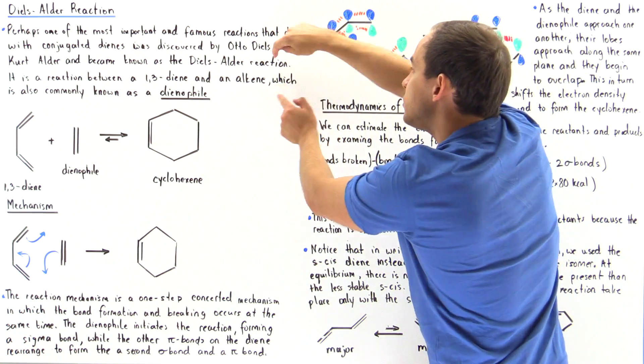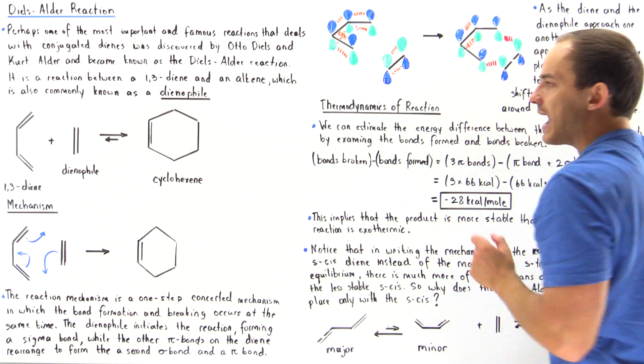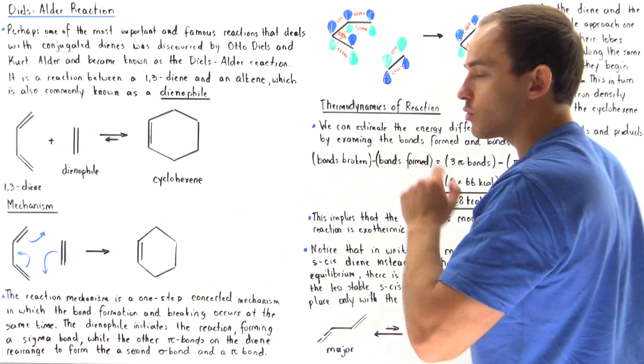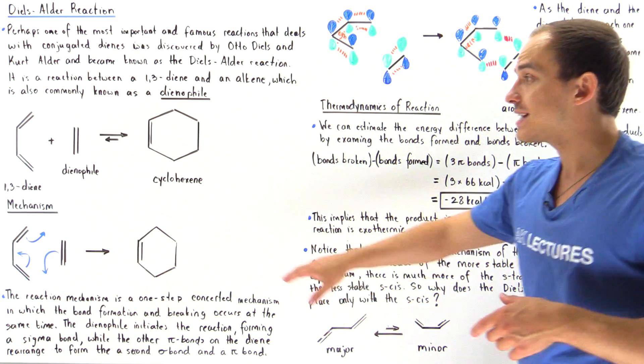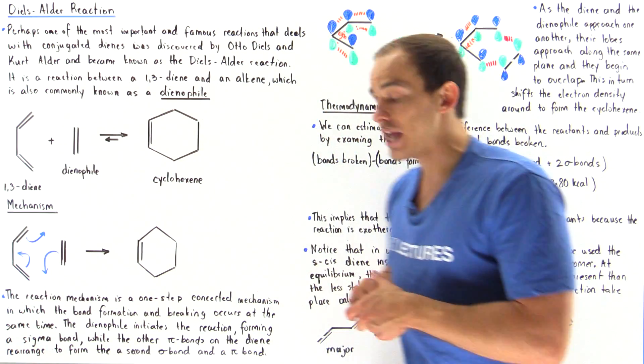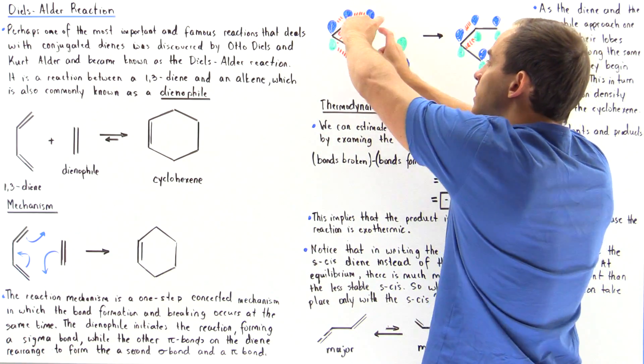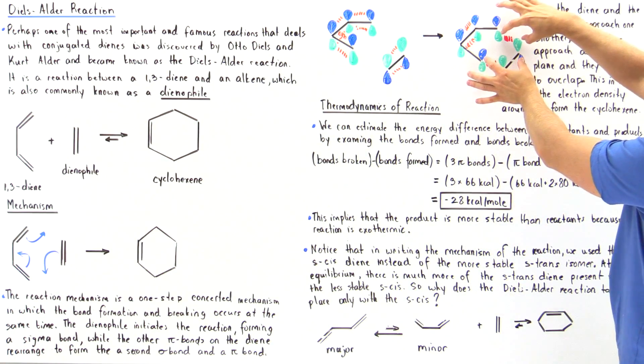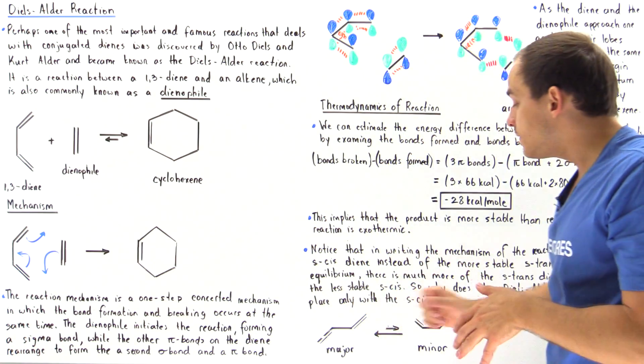And that's simply way too far and the overlap would not be able to take place in the case of our s-trans 1,3-diene. The reason that this doesn't interact in the Diels-Alder reaction and this interacts is because of our overlap that must take place for these two single sigma bonds to actually form. So even though this is the dominant isomer compared to this one,